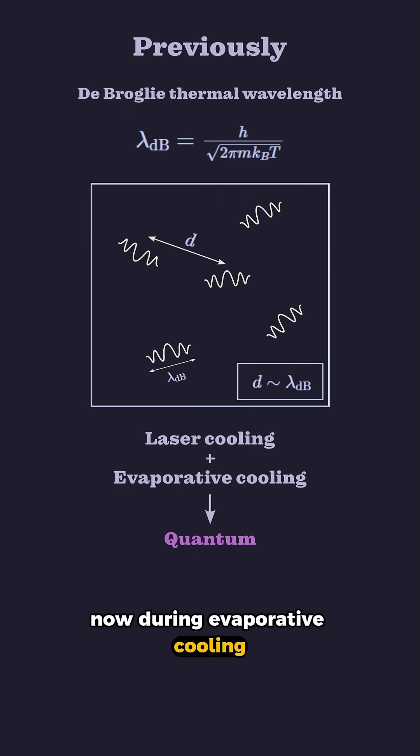Now during evaporative cooling there is a point where the de Broglie wavelength starts getting significant and it becomes comparable to the distance between the atoms, and at this point we start going through a phase transition.